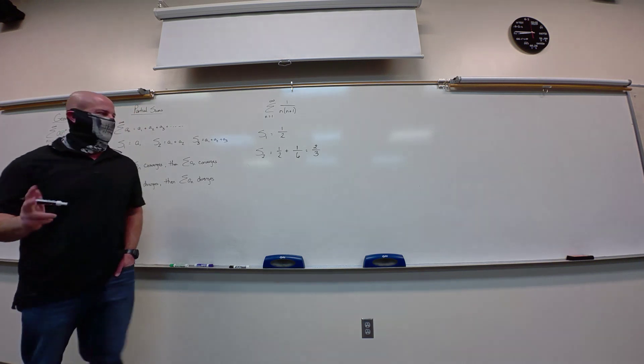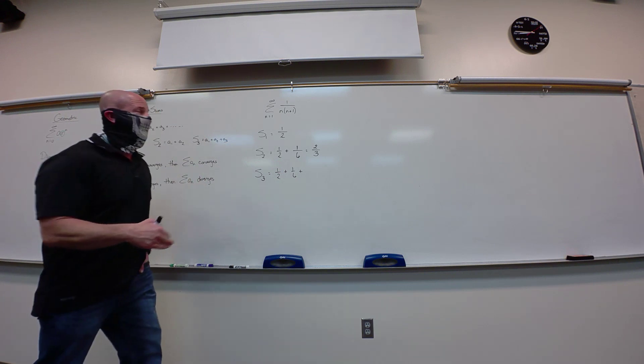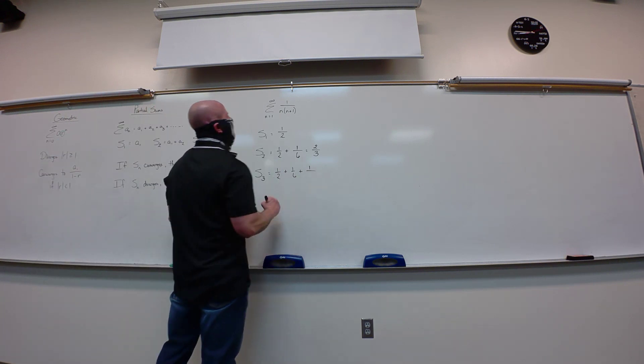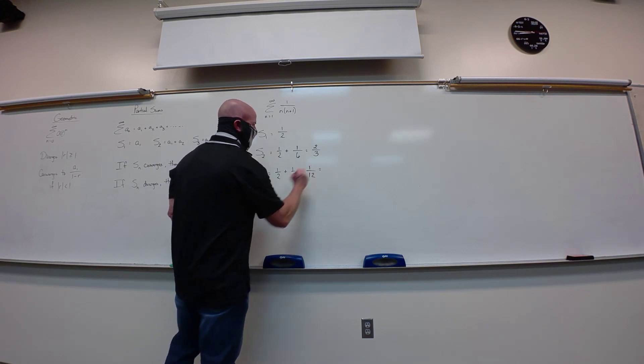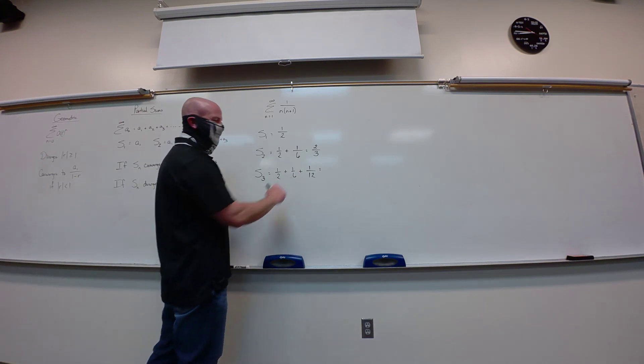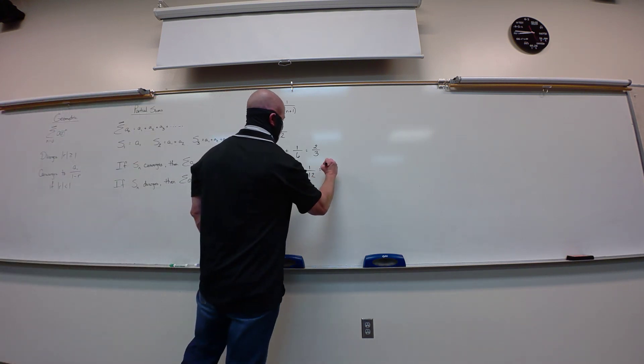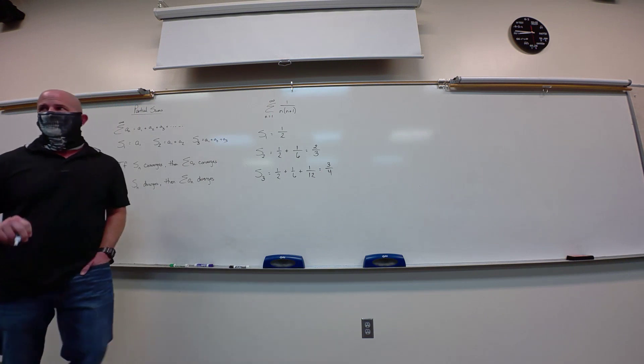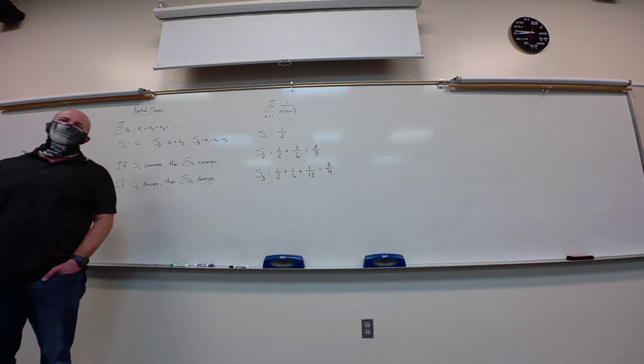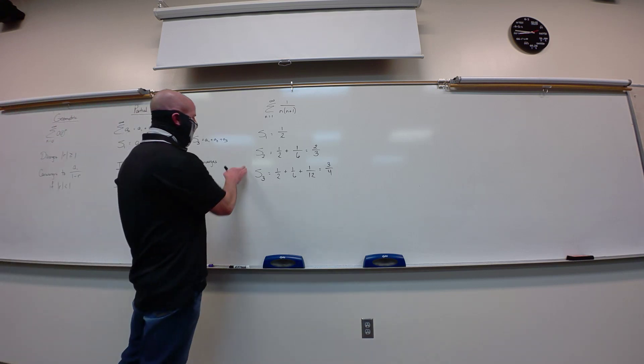So this one would be 1 over 1-fourth, which is 4, plus 1 over 2-fourths, which is 2, equals 6. So geometrics are our first one. And just wanted to kind of review that one. Sold that one a little bit in the last class. We also have what we call partial sums.